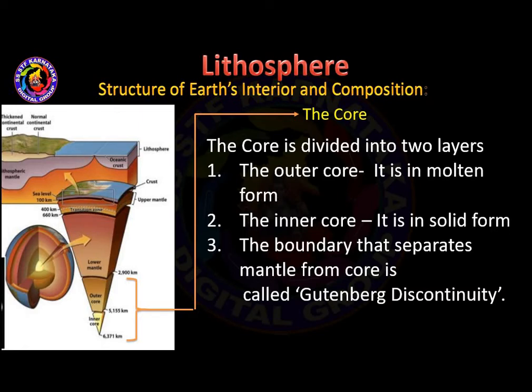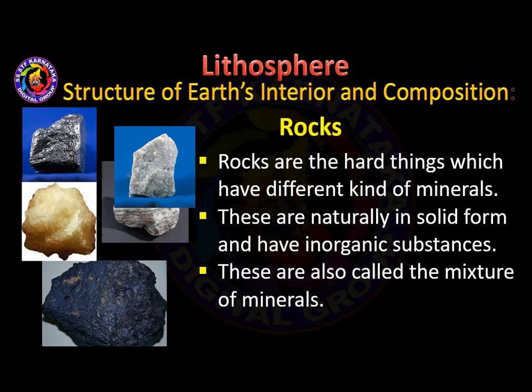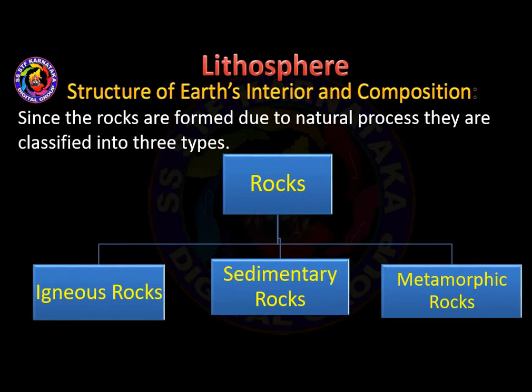The boundary that separates the mantle from the core is called the Wiechert discontinuity. The next topic we are going to study is rocks. Rocks are hard substances made up of different kinds of minerals. They are naturally in solid form and are also called a mixture of minerals.